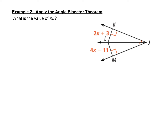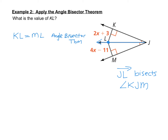Let's try an example applying the angle bisector theorem. Notice that ray JL bisects angle KJM — the two halves of the angle are marked equal with one curved line. By the angle bisector theorem, since a point lies on the angle bisector, it's equidistant from the sides. So KL must equal ML. Substituting: KL is 2x plus 3, and ML is 4x minus 11. Setting them equal: 2x plus 3 equals 4x minus 11.